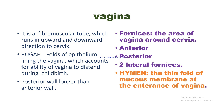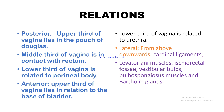The hymen is the thin fold of mucous membrane at the entrance of the vagina. Relations of the vagina: posteriorly — upper third lies in the pouch of Douglas, middle third is in contact with the rectum, and lower third is related to the perineal body. Anteriorly — upper third relates to the base of the bladder, and lower third to the urethra. Laterally, from above downward: cardinal ligaments, levator ani muscles, ischioanal fossae, vestibular bulbs, bulbospongiosus muscles, and Bartholin's glands.